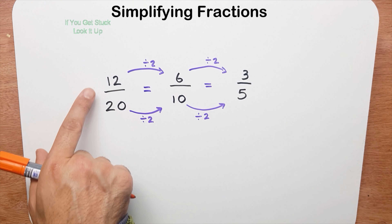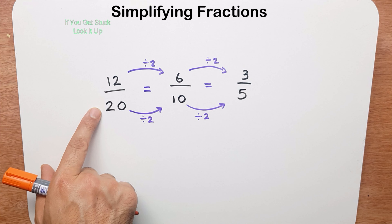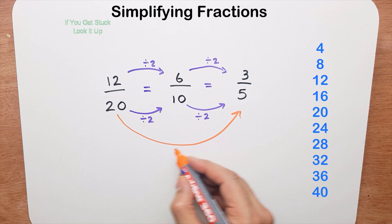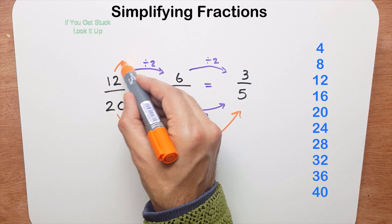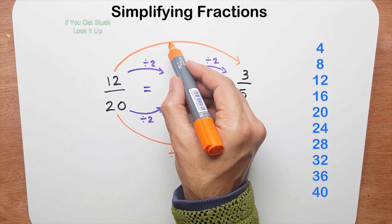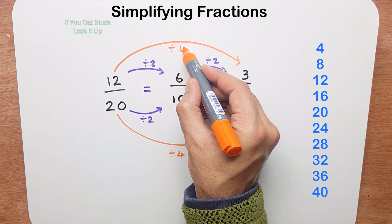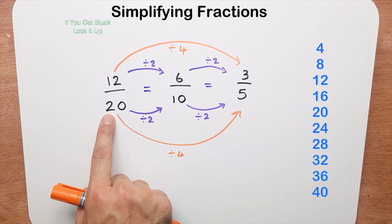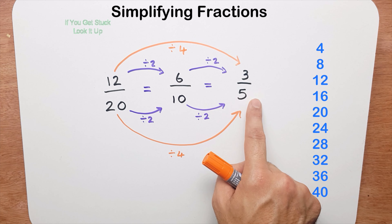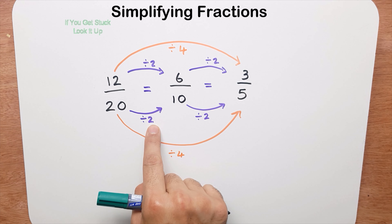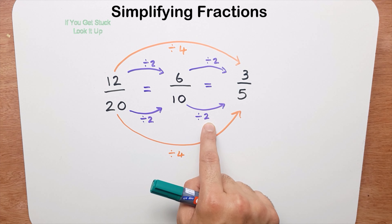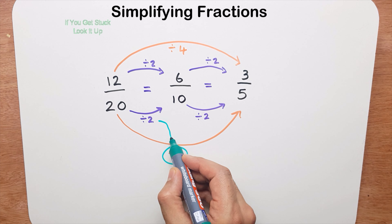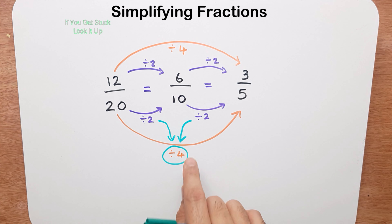Another way to do this is to recognise that 12 and 20 are both in the 4 times table. So I can divide 20 by 4 and divide 12 by 4 as well. 12 divided by 4 is 3, and 20 divided by 4 is 5. Make a note of this: instead of dividing by 2 and then dividing by 2 again, you can simply divide by 4 in one step. Learn that little trick from the previous video.